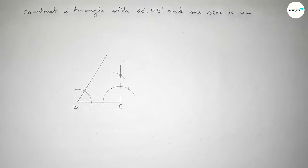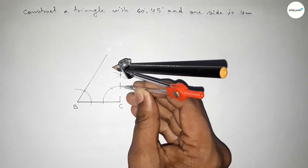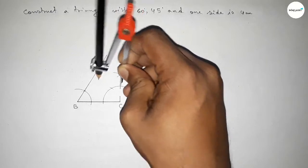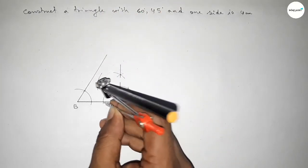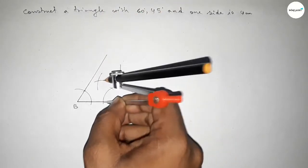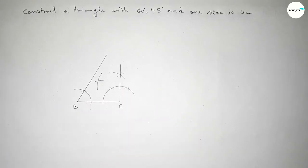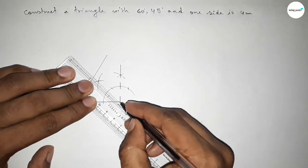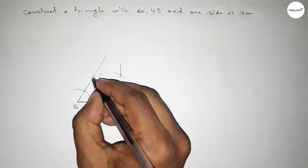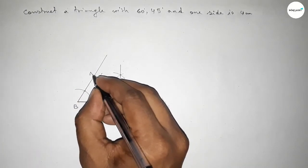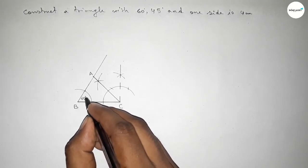First we draw a 90 degree angle, then bisect this angle. Putting the compass and taking greater than half of the arc, drawing an arc with the same length and cutting here so both curves intersect at a point. Joining this line to get a 45 degree angle at C, and both lines intersect at point A.